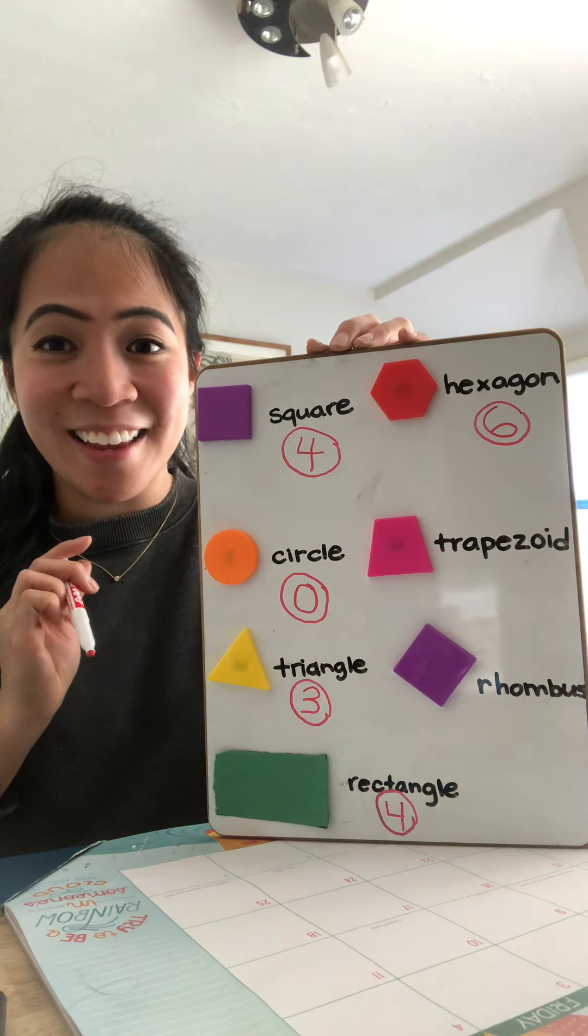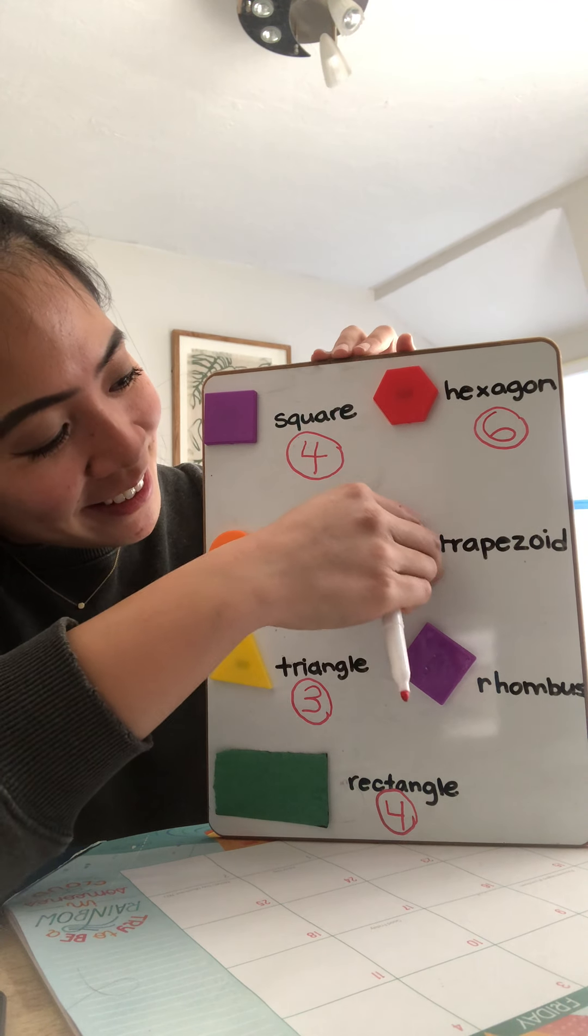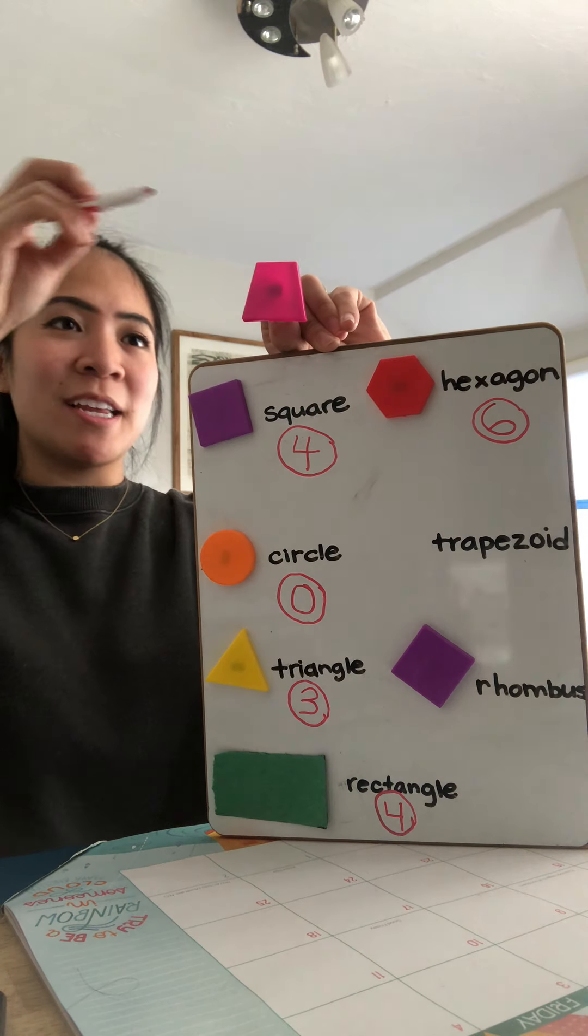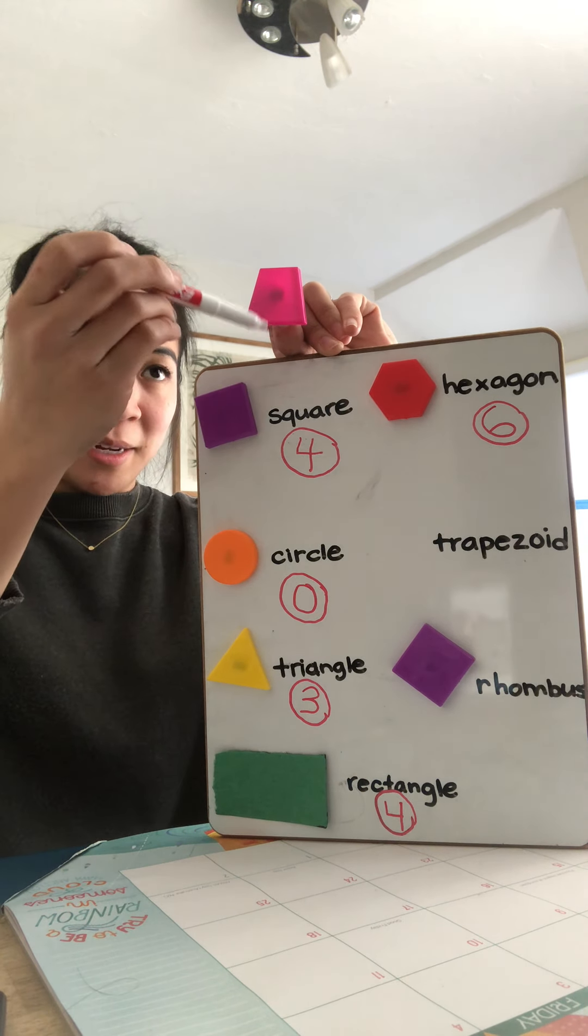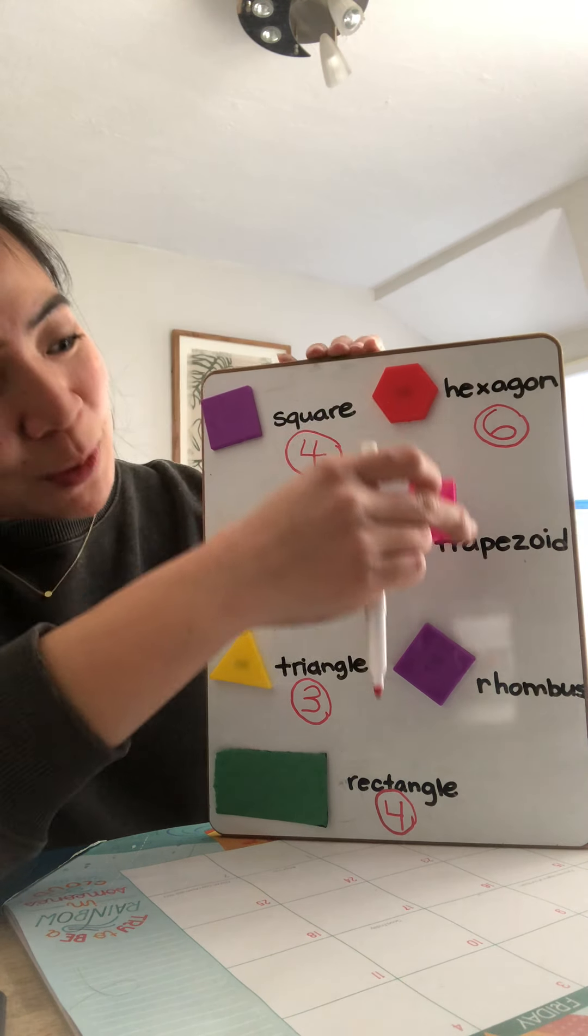Okay. The next shape is a trapezoid. Let's count how many sides a trapezoid has. Ready? One, two, three, four. Four sides in a trapezoid.